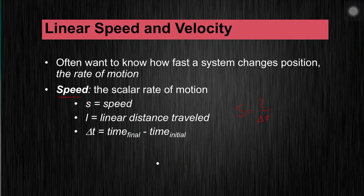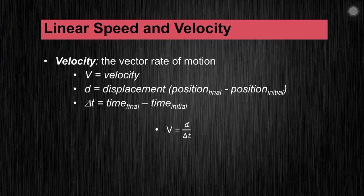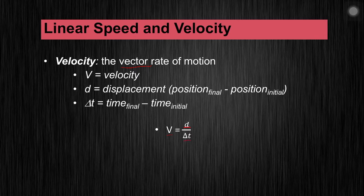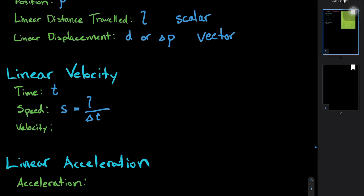Velocity is a vector rate of motion, whereas speed is scalar. Notice that instead of linear distance traveled, velocity uses linear displacement. So the equation is V equals D over delta T, where V is velocity, D is linear displacement — which equals final position minus initial position — and delta T is the change in time. Speed and velocity: S-scalar and V-vector — pretty easy to memorize.